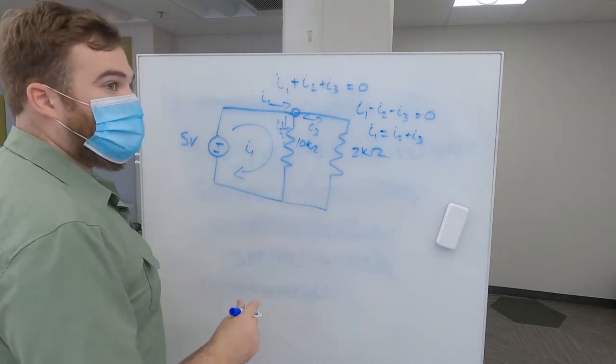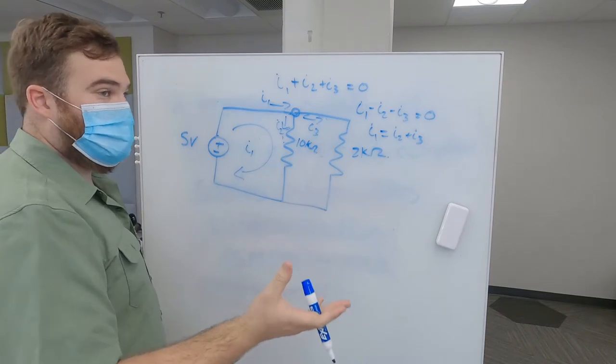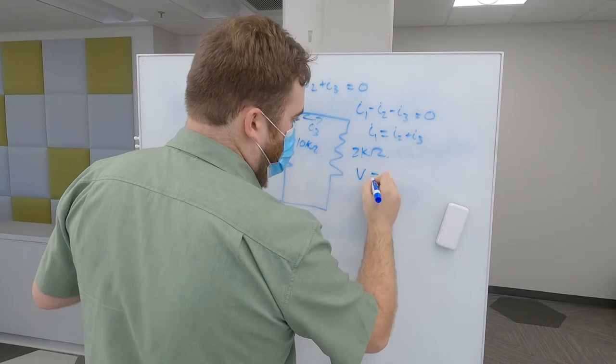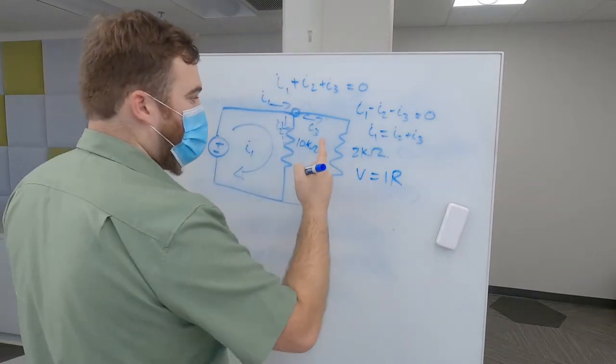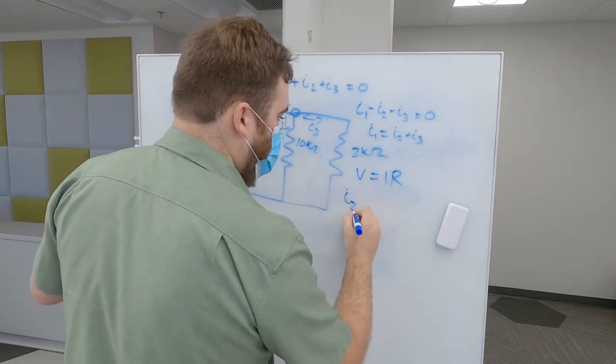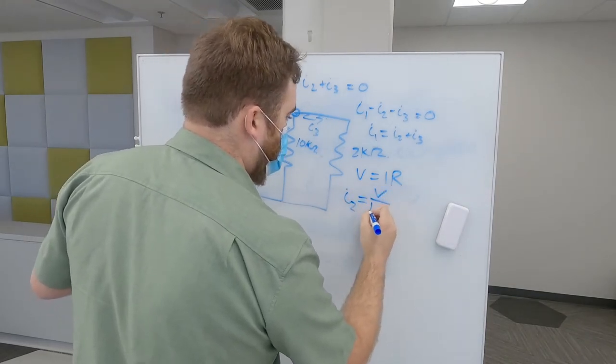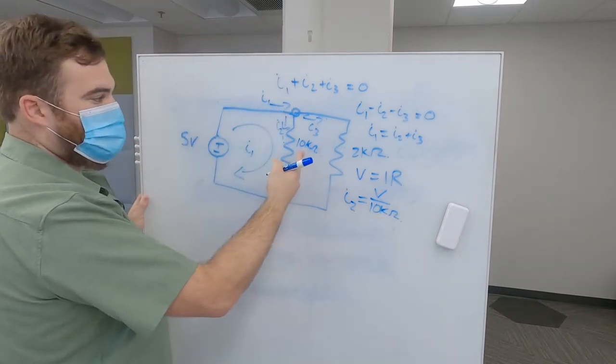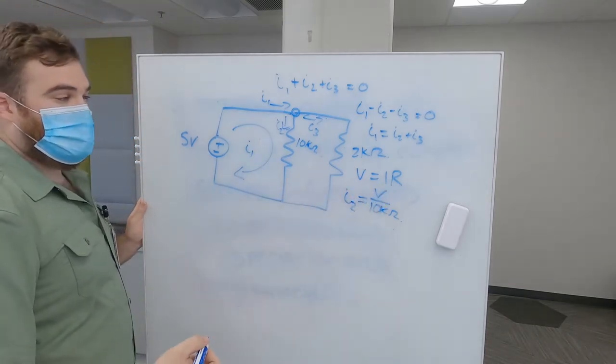So, we can compute each of these, I2 and I3, separately using Ohm's law. So we know that V equals IR, Ohm's law. And we can find that I2 here is going to be V over 10 kilohms. 10 kilohms is from this resistor. But this V, we have to figure out what that V is.